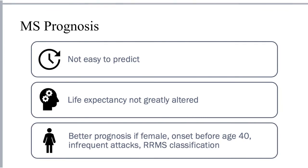Once a patient is diagnosed with MS, unfortunately their prognosis is not easy to predict, as it depends on a number of patient factors as well as what treatment interventions are utilized. However, in general, it is optimistic to note that the life expectancy of individuals with MS is not greatly altered compared to individuals without MS.